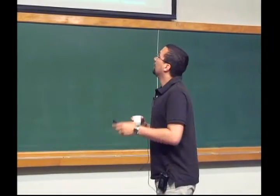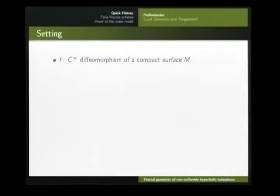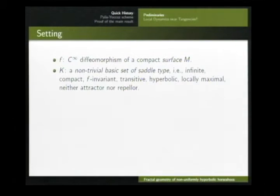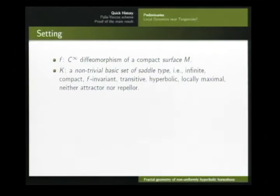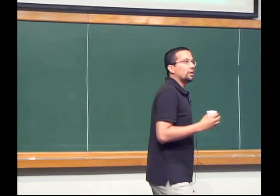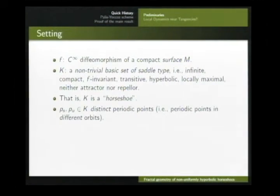In our setting, I restrict to the case of a diffeomorphism associated to a surface — a smooth diffeomorphism of some compact surface — and I select some K which will be some basic set of saddle type. Basic means it will be infinite, compact, f-invariant, transitive, hyperbolic, locally maximal, and saddle type — neither attractor nor repeller. In other words, it's a horseshoe. And then inside this horseshoe I select two periodic orbits; for this talk I'll take these periodic orbits distinct, meaning two points not in the same orbit.